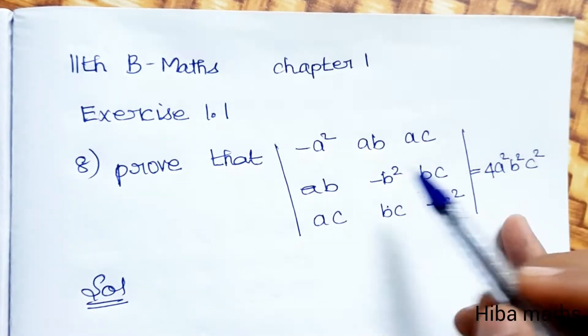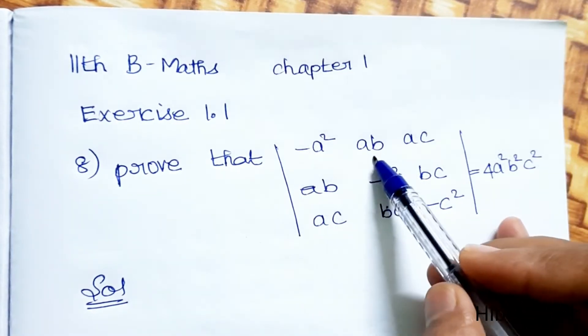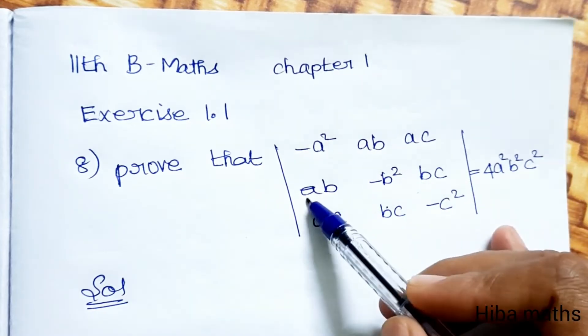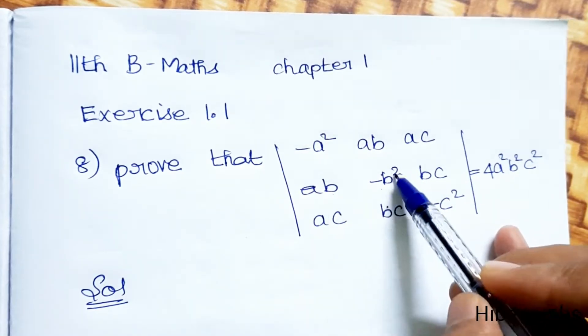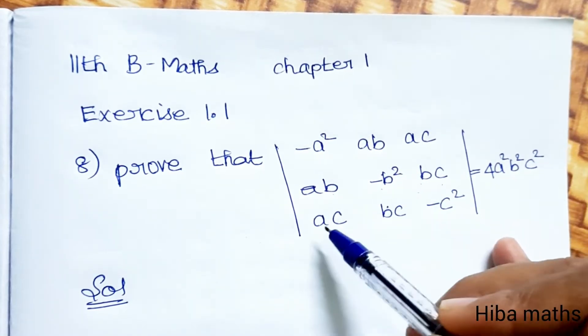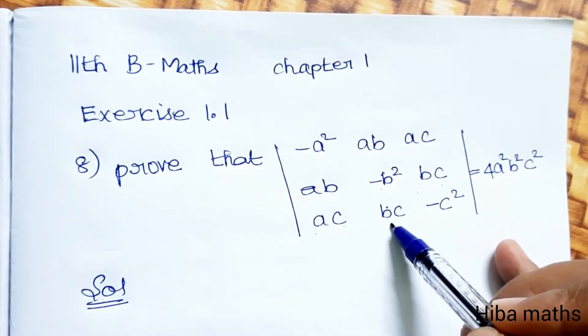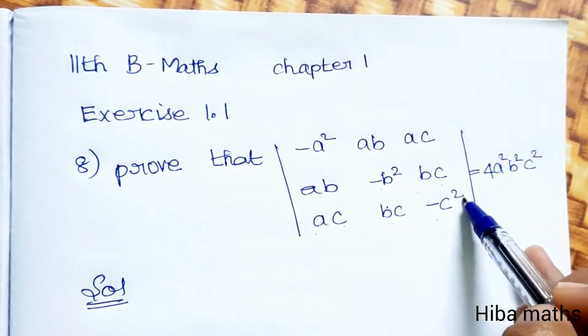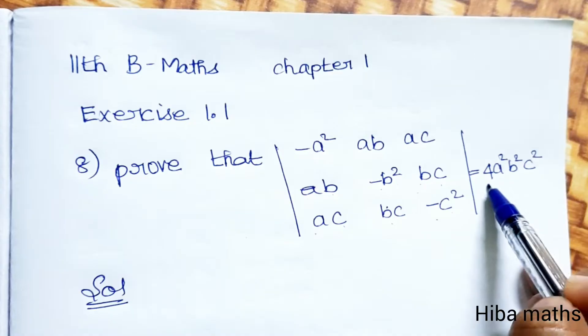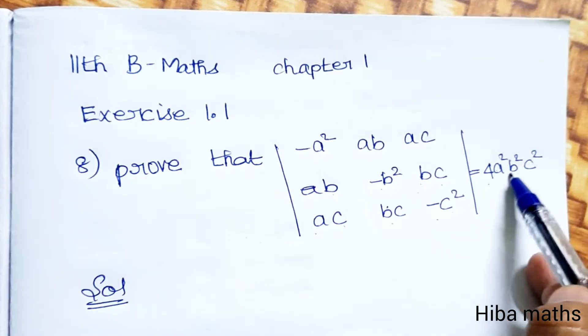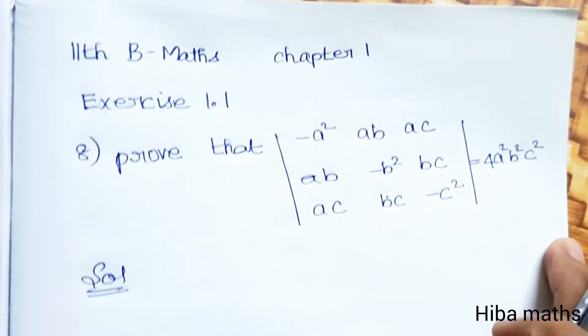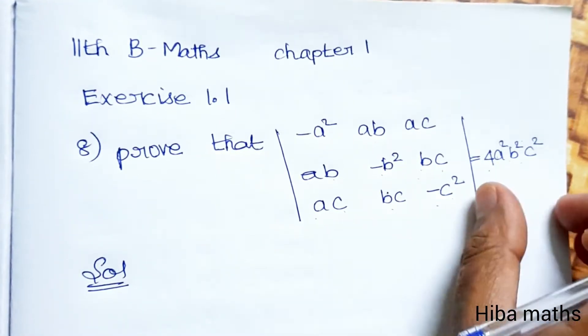Prove that the determinant with entries: minus a-squared, ab, ac in row 1; ab, minus b-squared, bc in row 2; ac, bc, minus c-squared in row 3 is equal to 4 times a-squared b-squared c-squared.